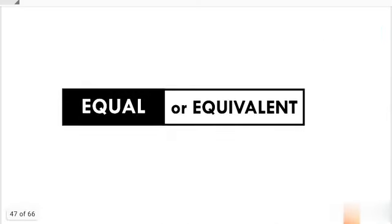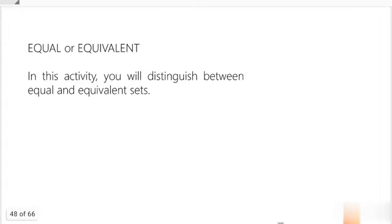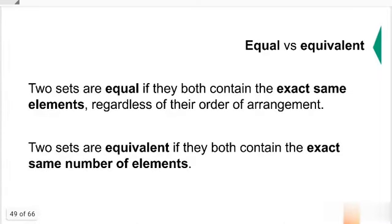Now we talk about equivalent or equal sets. First, definitions. Two sets are equal if they both contain the exact same elements, regardless of their order of arrangement. It's like subsets. Set A and set B are identical because both of them have the same elements.